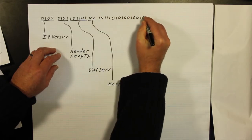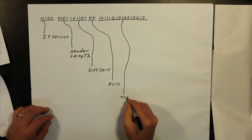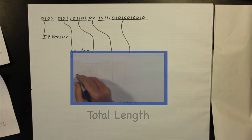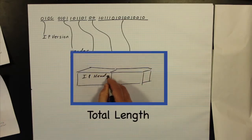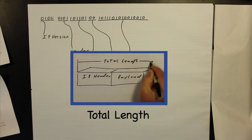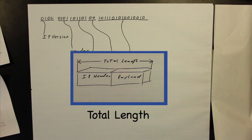Total length refers to the length of the entire packet, or datagram. Again, this is in the form of 32-bit words, with a minimum of 20 and a maximum of 65,535 words.